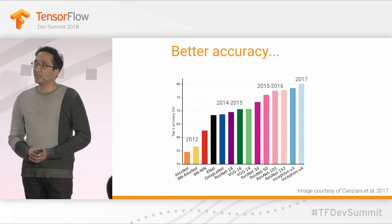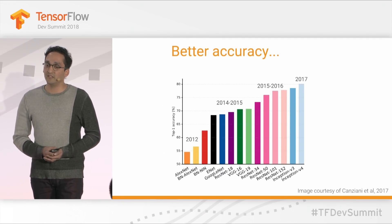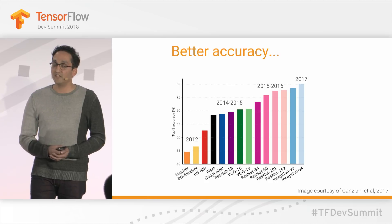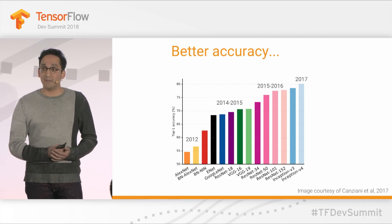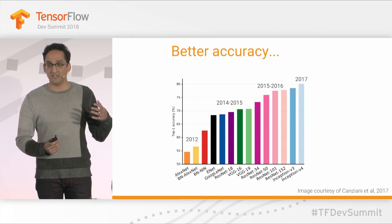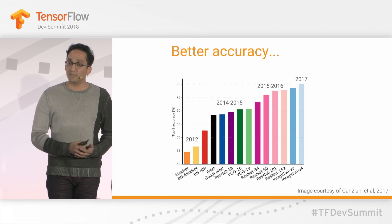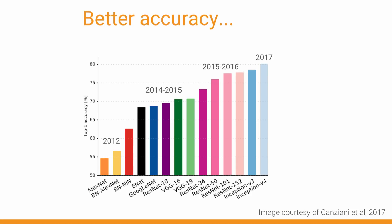One concrete way of looking at this is that in the field of computer vision, we've seen top-one ImageNet accuracy start from something like the 50% range from the AlexNet architecture — which revolutionized the field of image classification — and every year we've been getting better and better up until 2017.